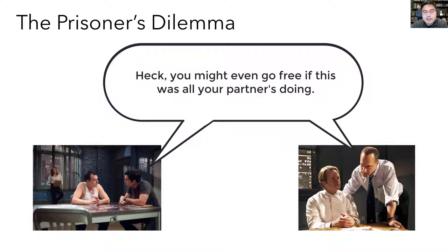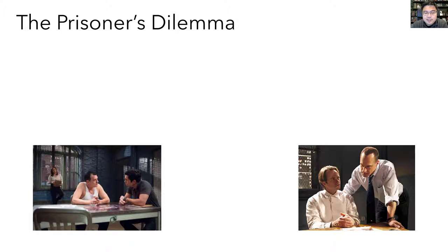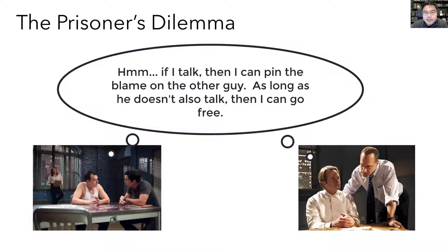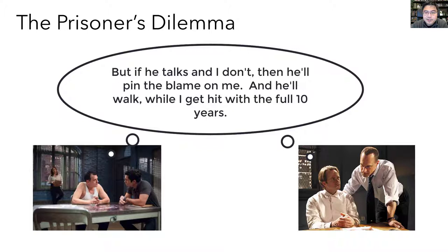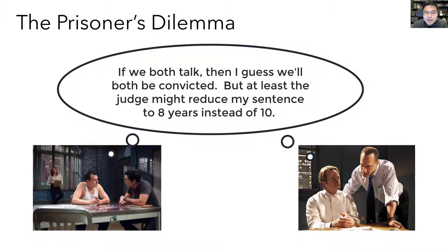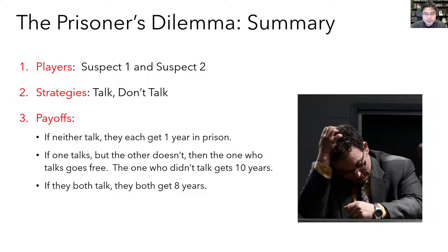The suspects think: if I talk, I can pin the blame on the other guy — as long as he doesn't also talk, I can go free. But if he talks and I don't, he'll walk while I get 10 years. If we both talk, we'll both be convicted, but the judge might reduce my sentence to 8 years. In game theory terms: the players are suspect 1 and suspect 2; their strategies are to talk or not talk; and their payoffs are — if neither talks: 1 year each; if one talks and the other doesn't: the talker goes free, the other gets 10 years; if both talk: 8 years each.